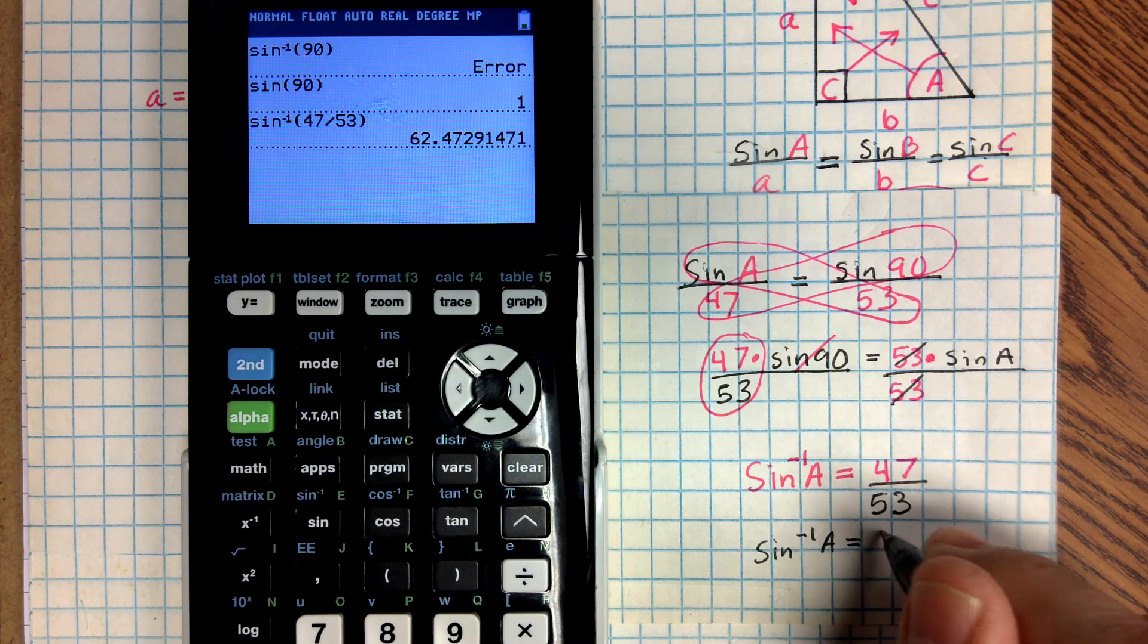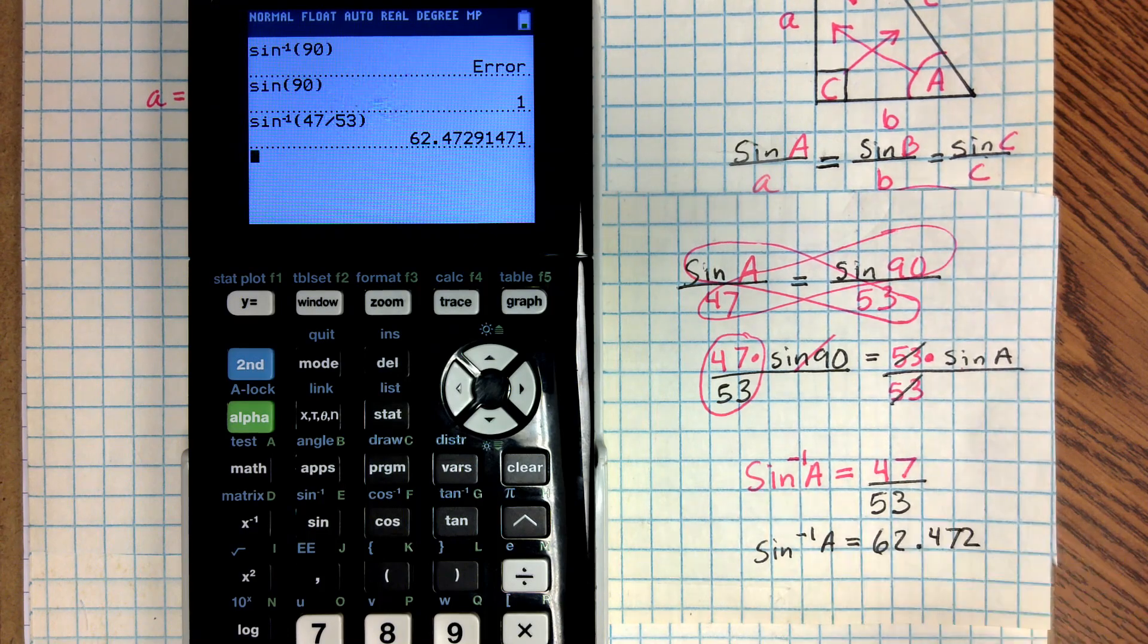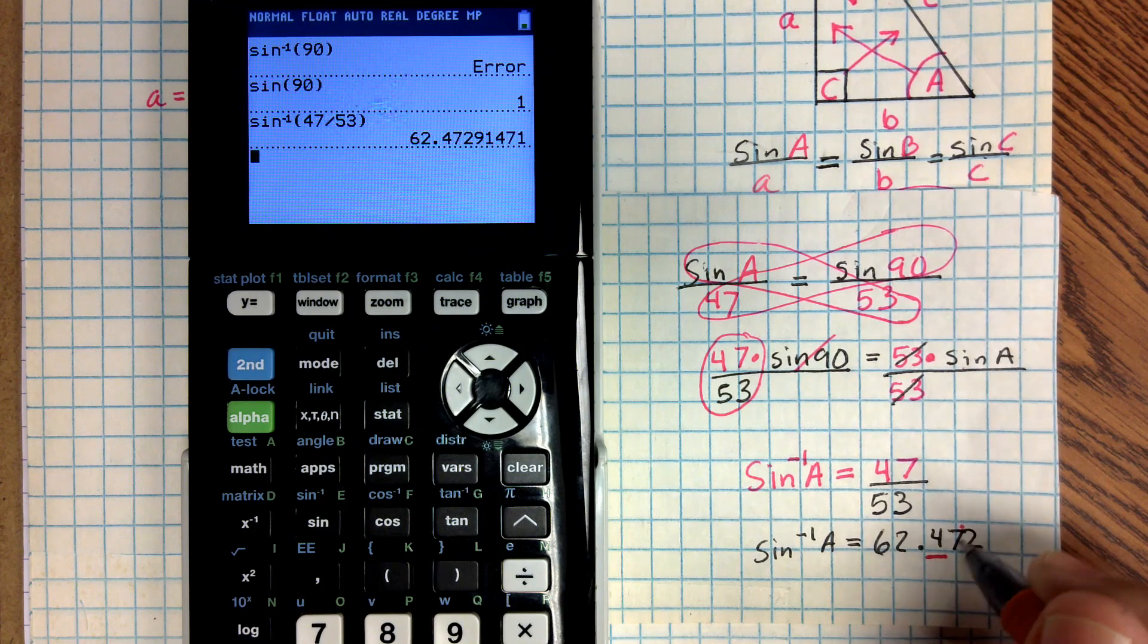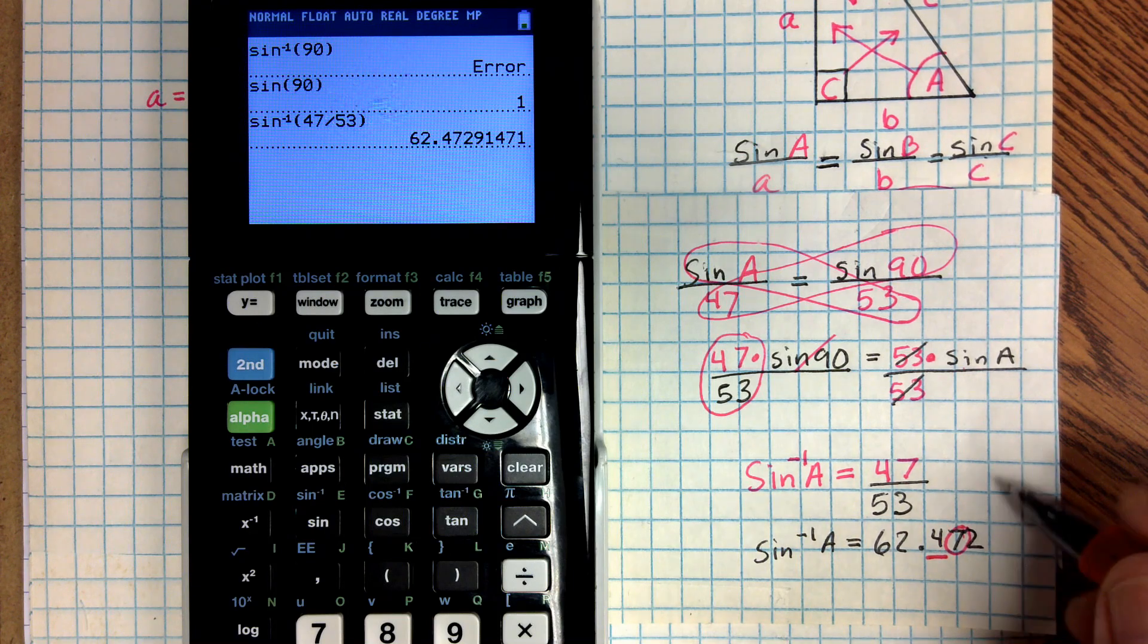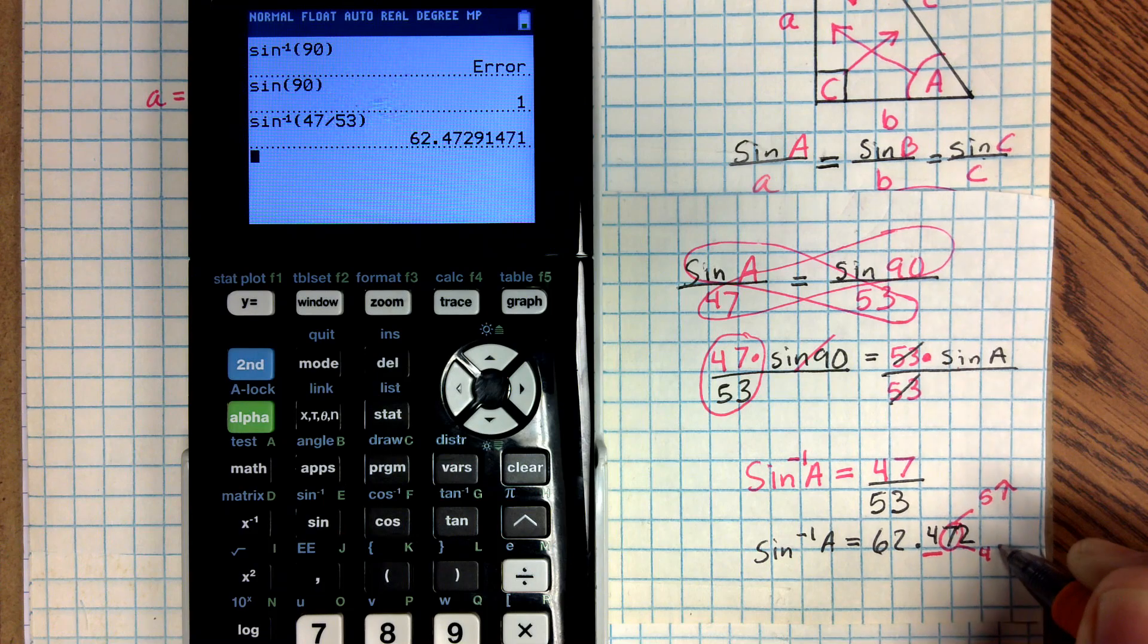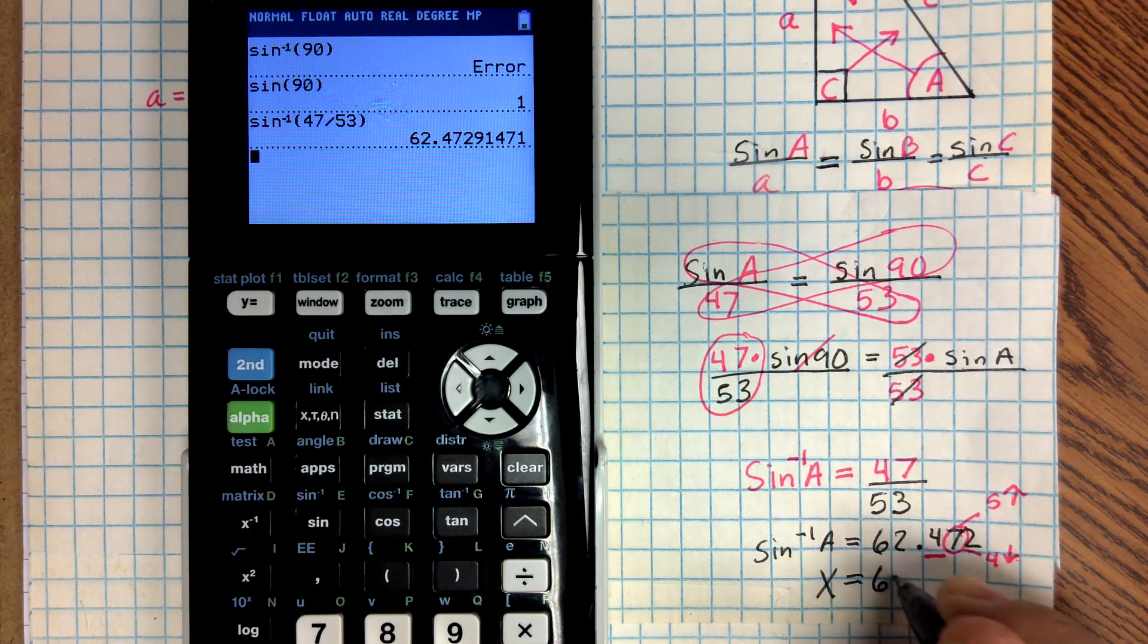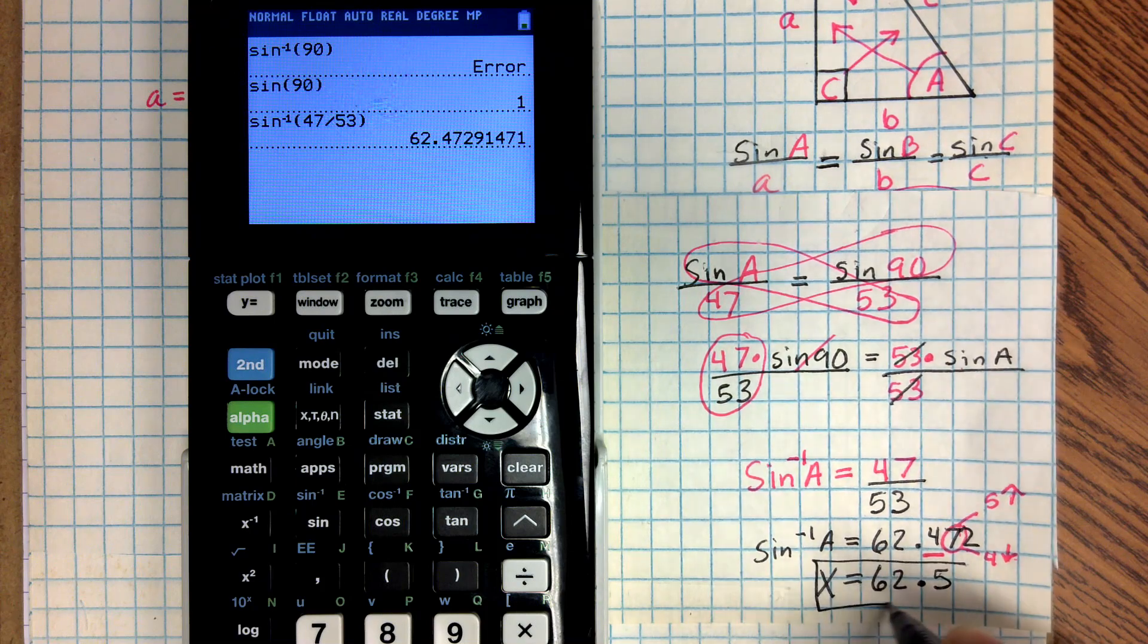So I'm going to write three decimal places for now. So 62.472. And now what we want to do is we want to round it. And I notice a lot of your activities they're having you round to the tenths as well. So this one we're going to practice round it to the tenths. So I'm going to underline the tenths place. I'm going to circle the hundredths place. And notice that is a 7, right? And remember, 5 or more raise the score. So if it's 5 or more, we've got to raise the value up. If it's 4 or less, we leave it the same. So I'm just going to put it down, we leave it alone. Now that is a 7. So when I write my final answer, I'm going to say X, which is the missing angle, is equal to 62.5. I'm going to box it, and that is my final answer.